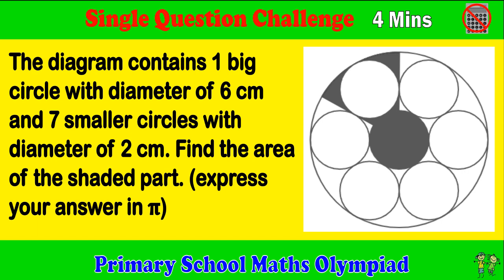The diagram contains 1 big circle with diameter of 6 cm and 7 smaller circles with diameter of 2 cm. Find the area of the shaded part. Express your answer in π.